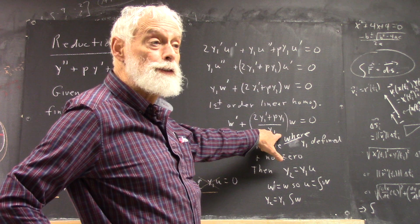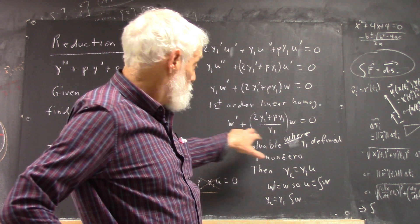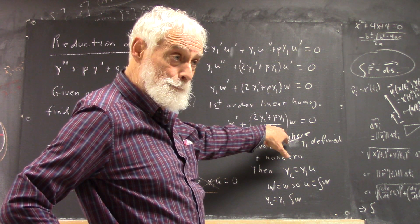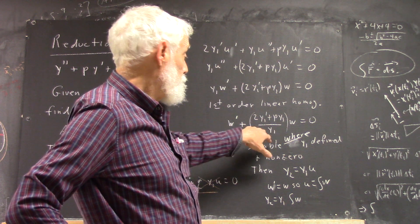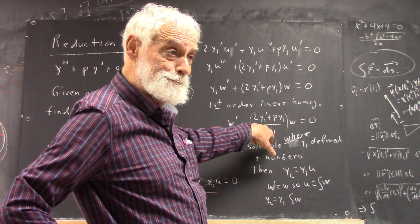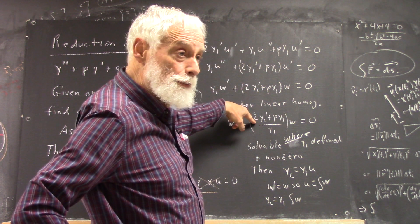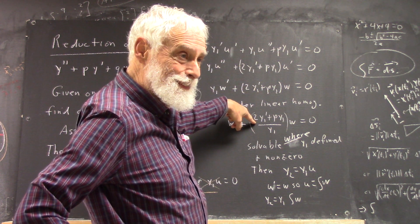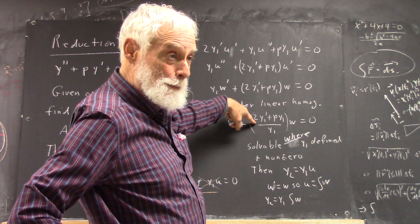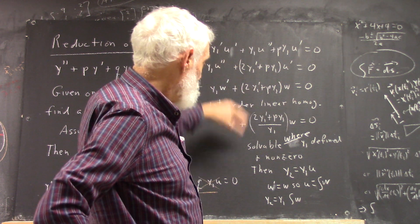And then you asked earlier, is this thing separable? Well, I wanted to see it as a first-order linear, but first-order linear equations are separable. Because you're going to get a dw over w equals the negative of this dt, right? I mean, you just separate it.